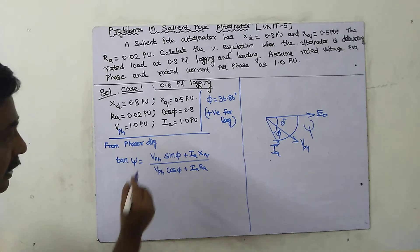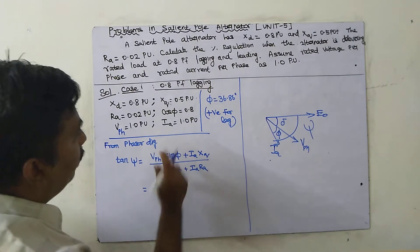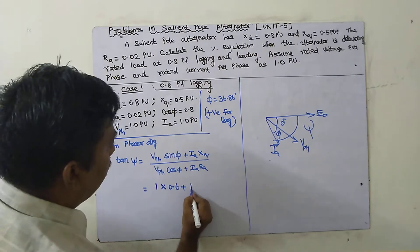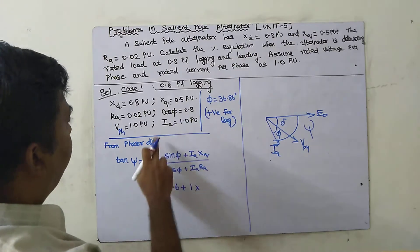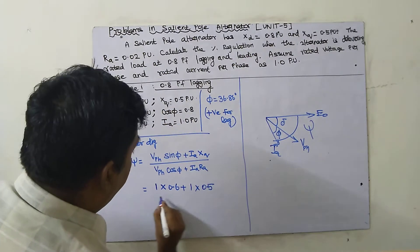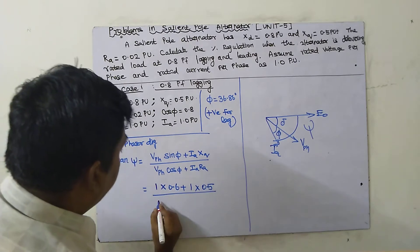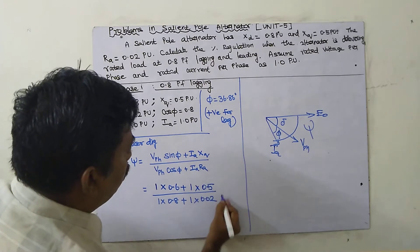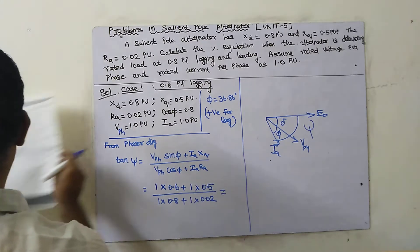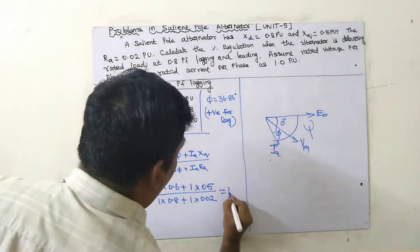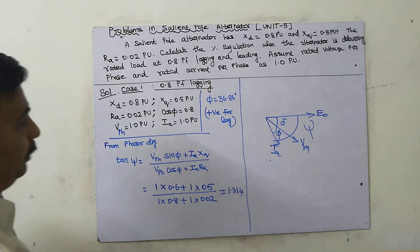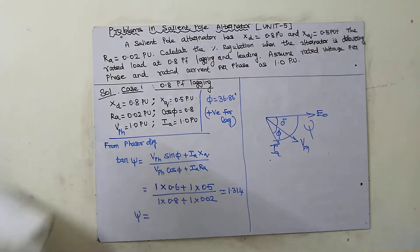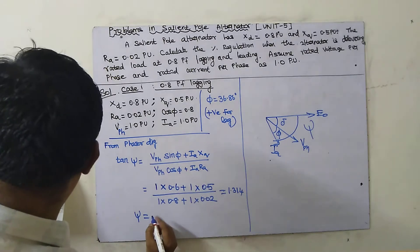Substituting values: tan ψ = (1 × 0.6 + 1 × 0.5) / (1 × 0.8 + 1 × 0.02), where sin φ = 0.6 and cos φ = 0.8. Solving this gives a value of 1.314, so ψ = tan⁻¹(1.314).